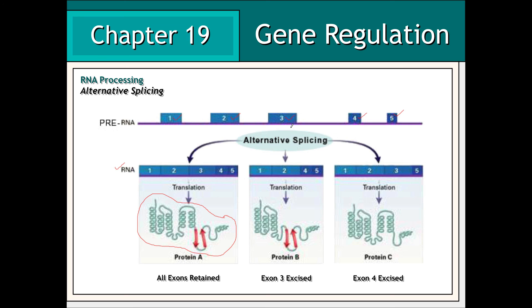In the second example, however, exon number 3 has been treated as if it were an intron. As a result, it has been edited out, and therefore, as a result of translation, a slightly different protein product having a slightly different effect on cellular metabolism will be produced. In the last example, it is exon 4 that has been treated as an intron and has been edited out by a spliceosome, producing still another different polypeptide and protein product, expected to have a different effect on cellular metabolism as well as cellular development.